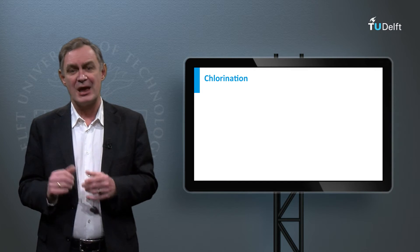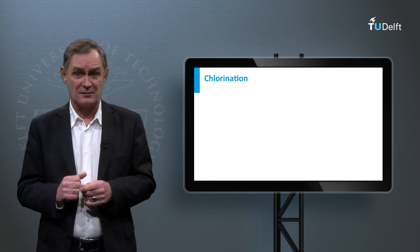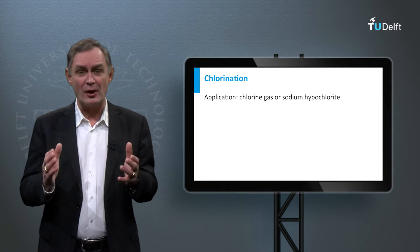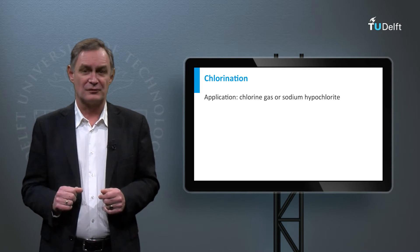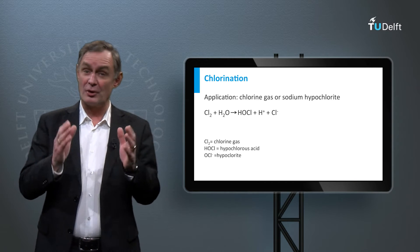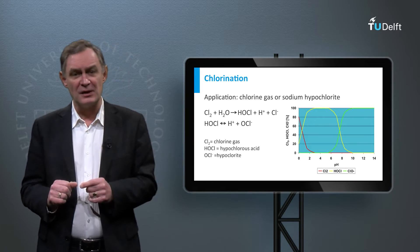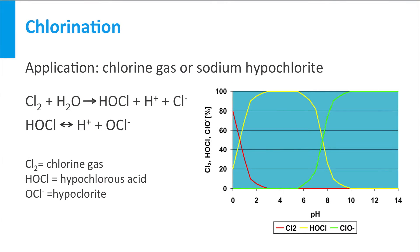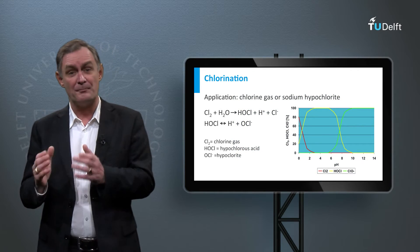Chlorine is the most widely used disinfectant, since it is the easiest to operate and the least expensive disinfection technique. It is applied as chlorine gas or as sodium hypochlorite liquid or powder. When chlorine gas is used, it dissolves in water and hypochlorous acid is produced. Depending on the pH, hypochlorous acid is dissociated into hypochlorite. In this figure you can see the distribution of chlorine gas, hypochlorous acid, and hypochlorite for different pH values.